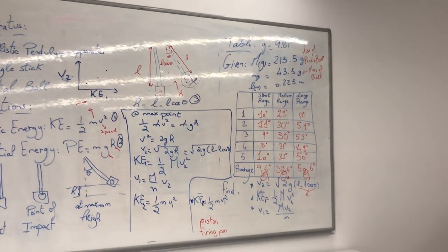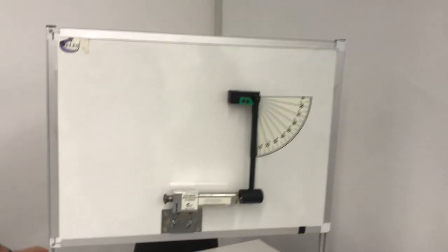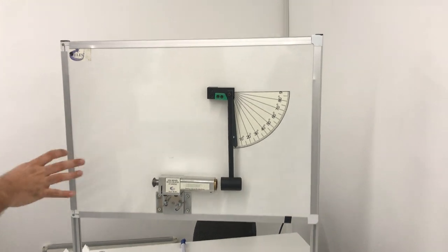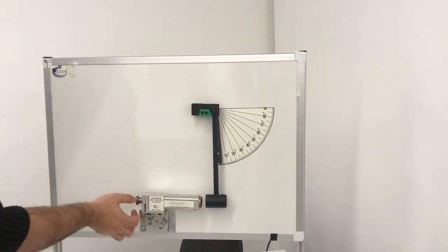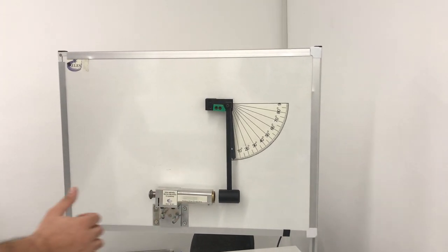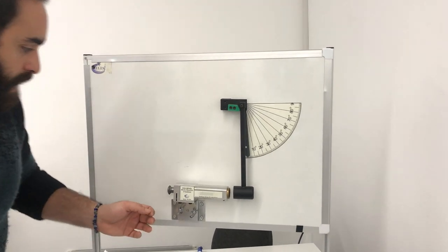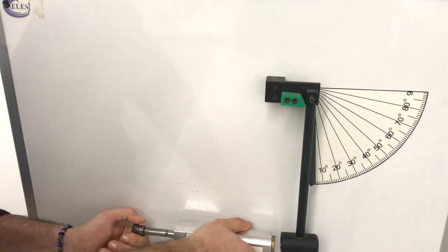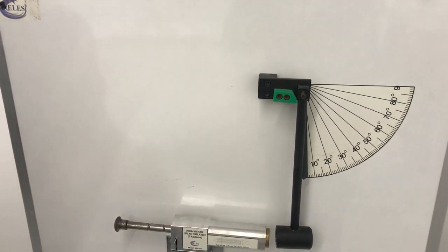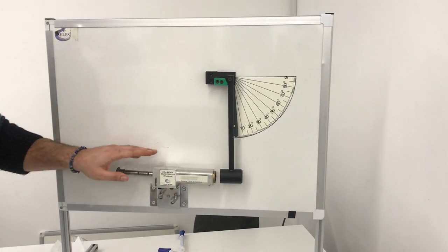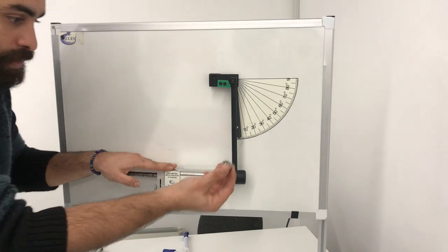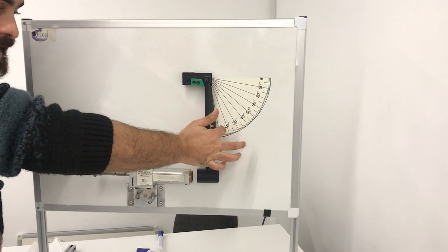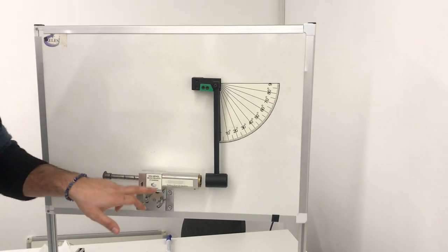Moving on to the apparatus: we have the ballistic pendulum apparatus, which is the stand and mechanism. Inside there is a piston and a spring. The apparatus has three ranges: short range, medium range, and long range. You put it at the range, then put the metallic ball inside. This is the pendulum and this is the angle stick — the angle stick has a hook that connects to the pendulum. When the spring is compressed and released, it fires the ball into the pendulum.